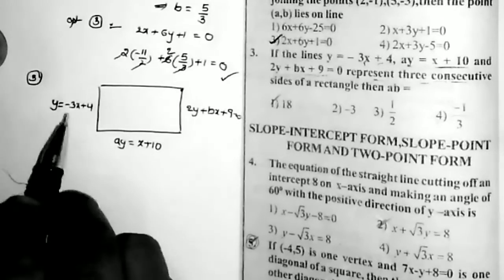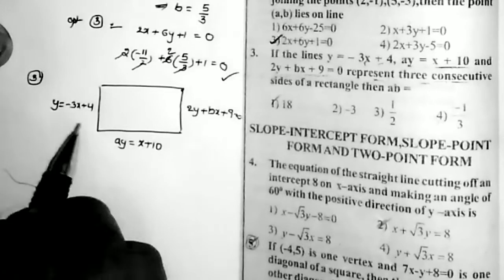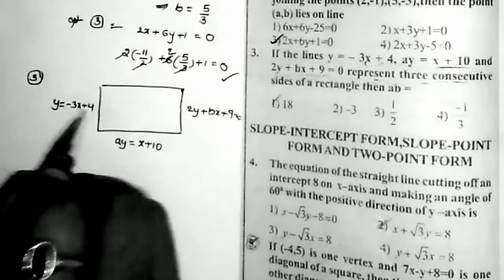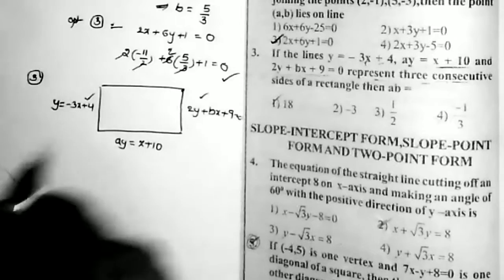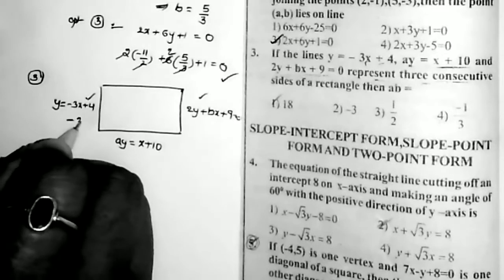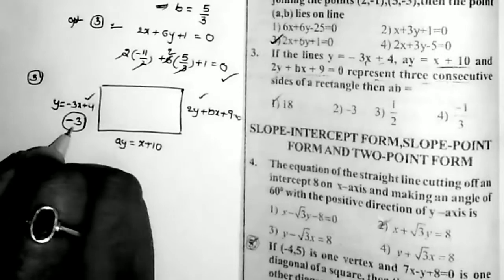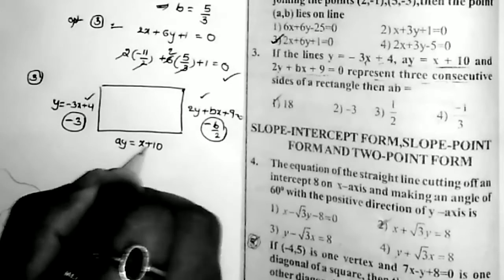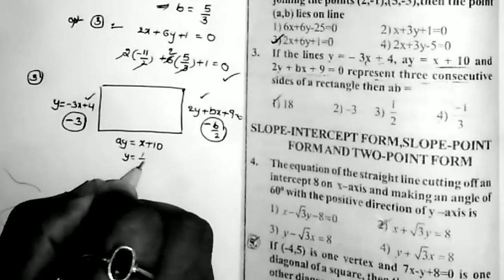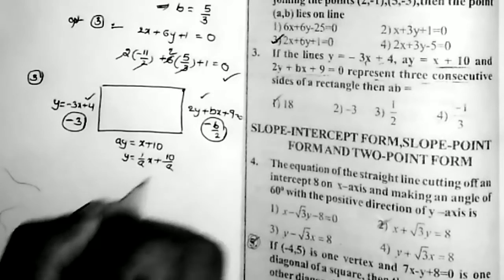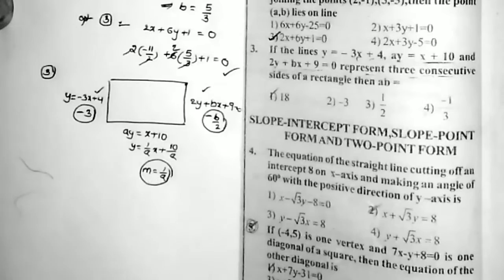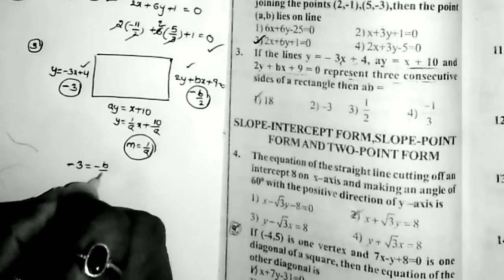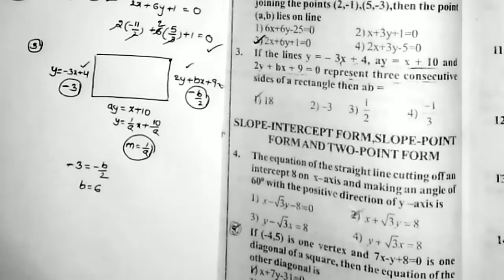Since these are consecutive sides of a rectangle, opposite sides are parallel (slopes equal) and adjacent sides are perpendicular. The slope of the first line y = −3x + 4 is −3. Rewriting the third equation: y = (−b/2)x − 9/2, so its slope is −b/2. Since lines 1 and 3 are parallel: −3 = −b/2, therefore b = 6. The second line ay = x + 10 has slope 1/a. Since lines 1 and 2 are perpendicular: (1/a)(−3) = −1, therefore a = 3.